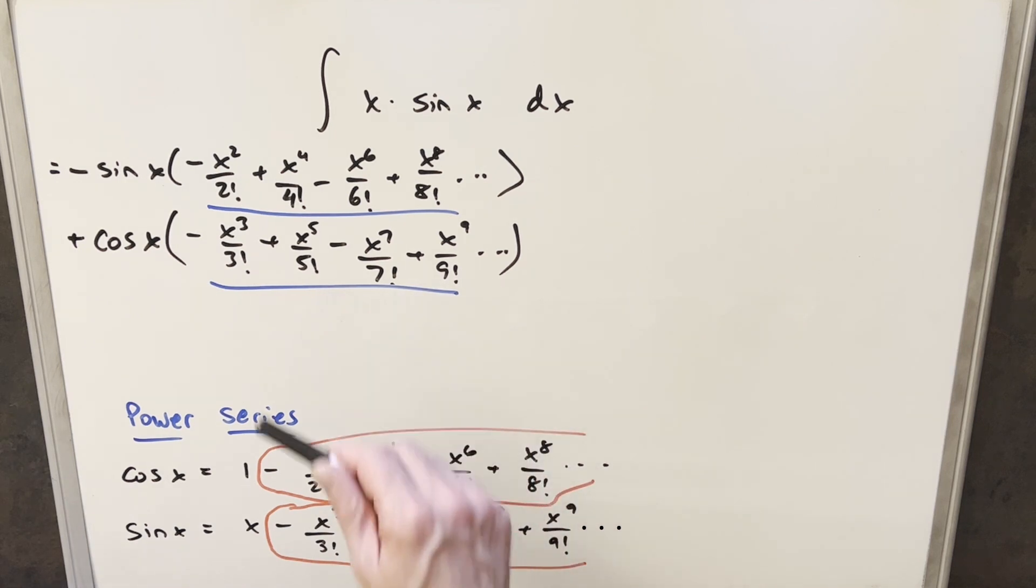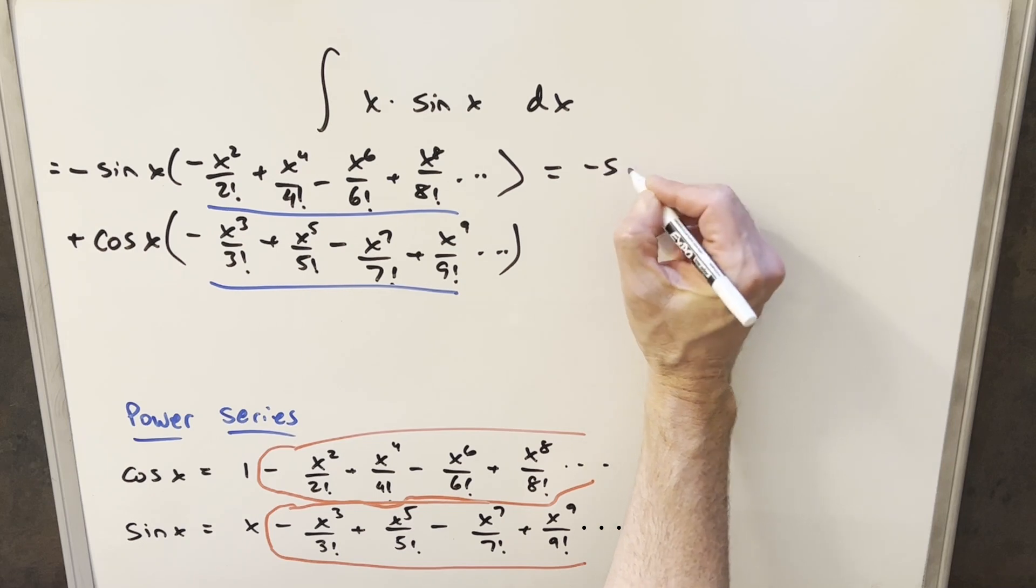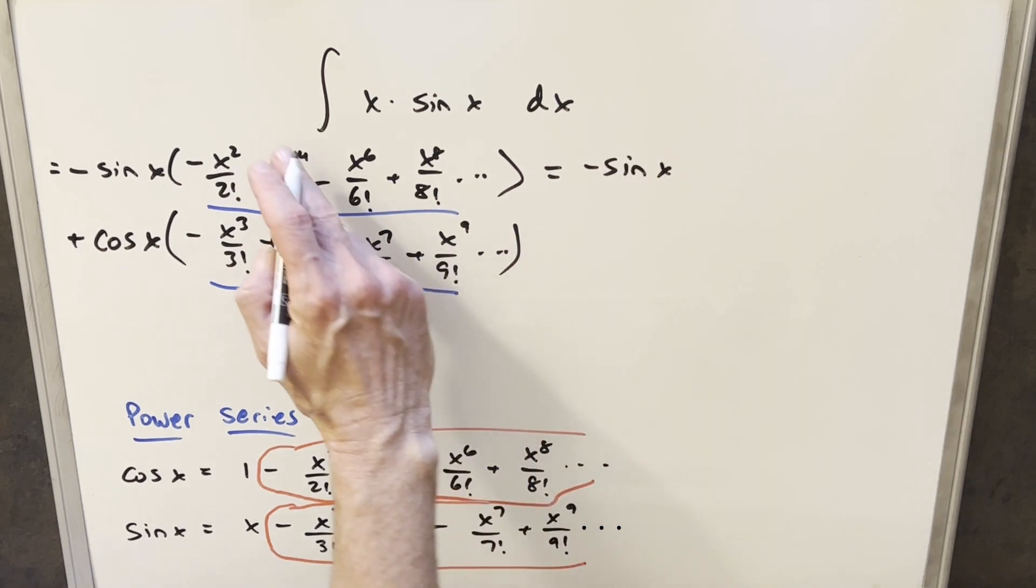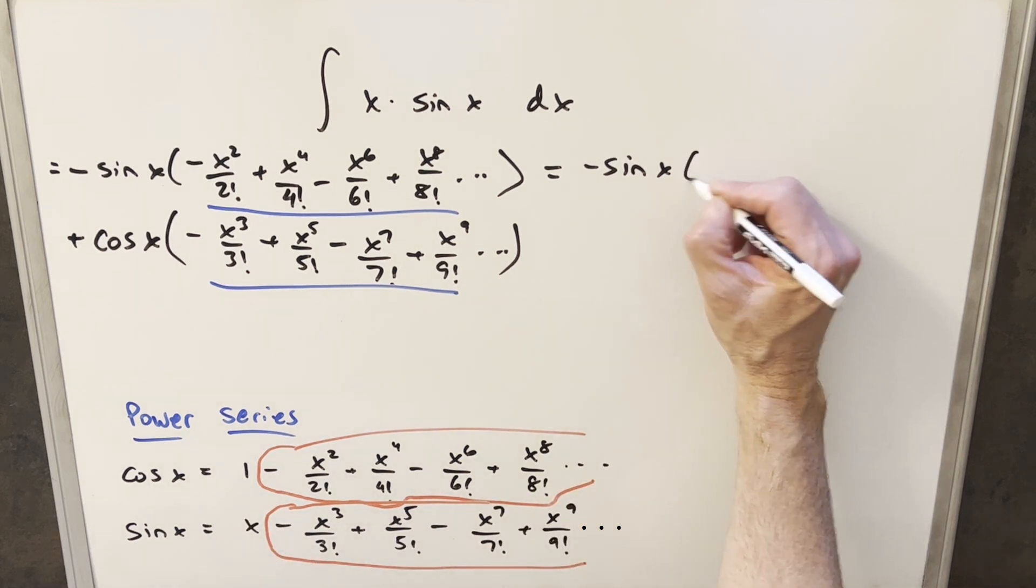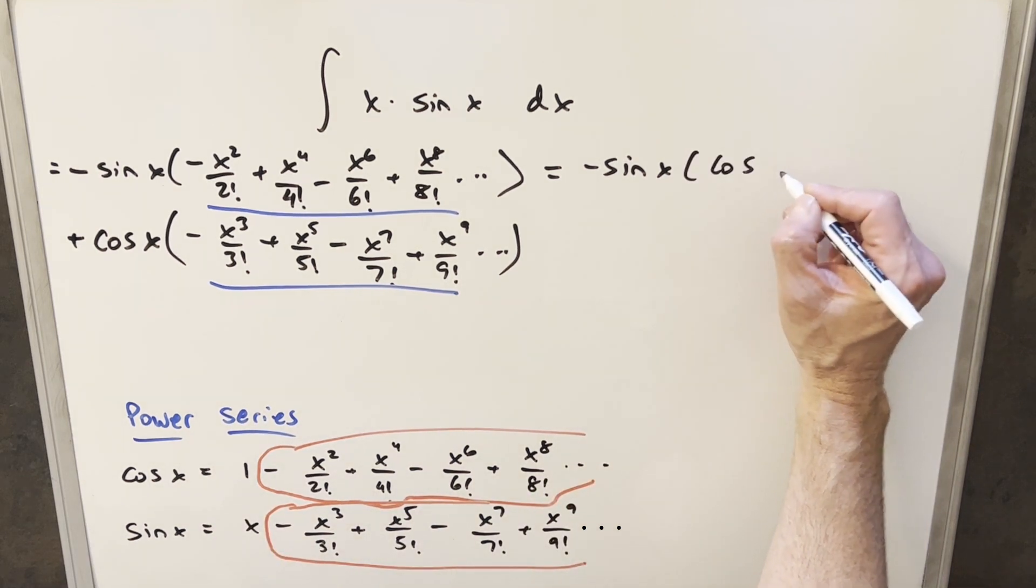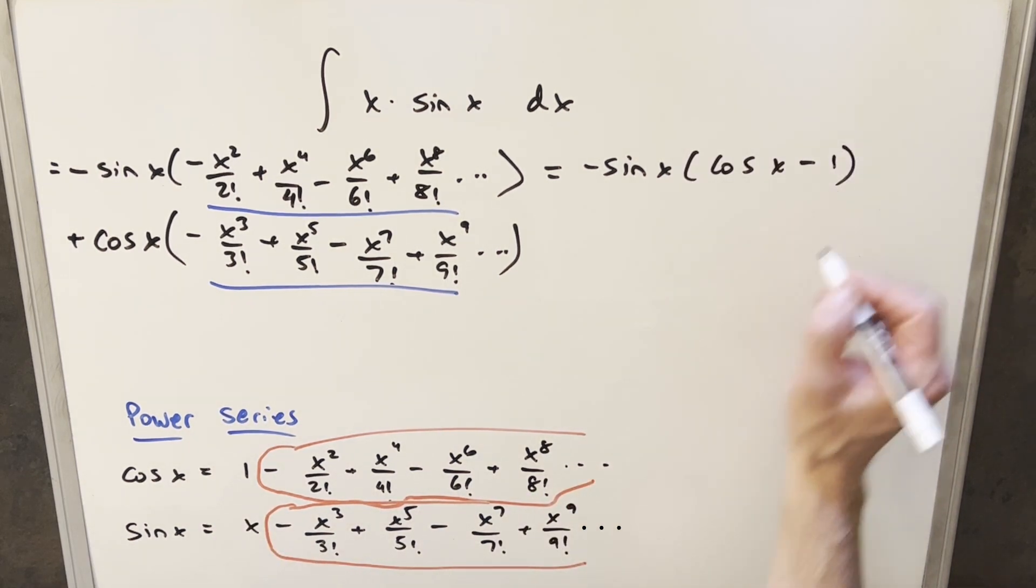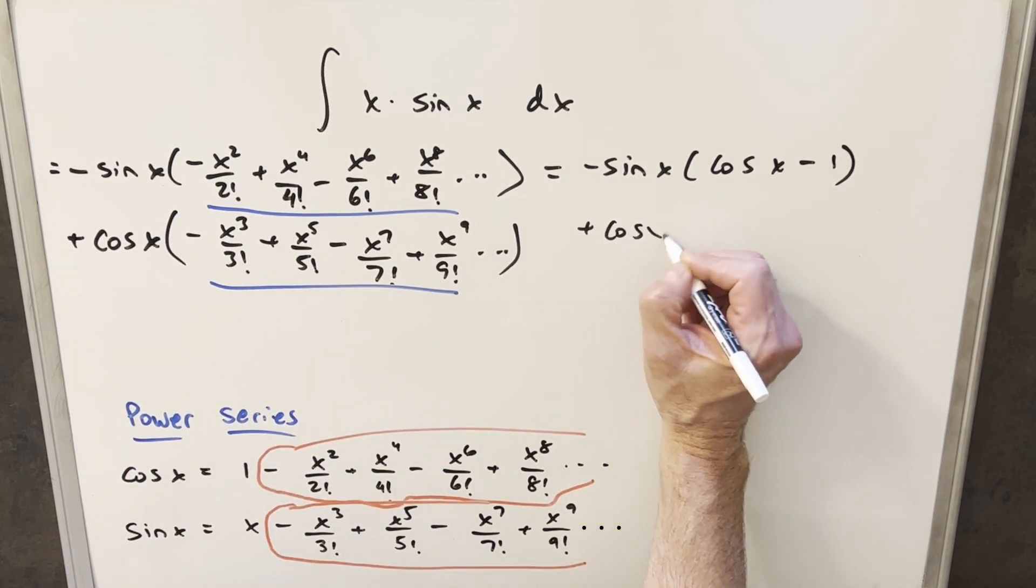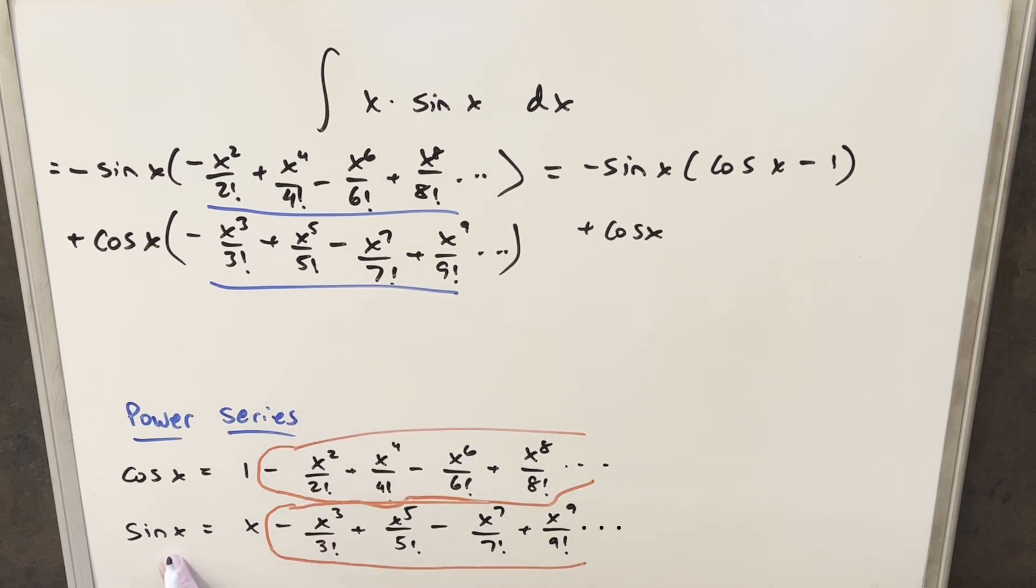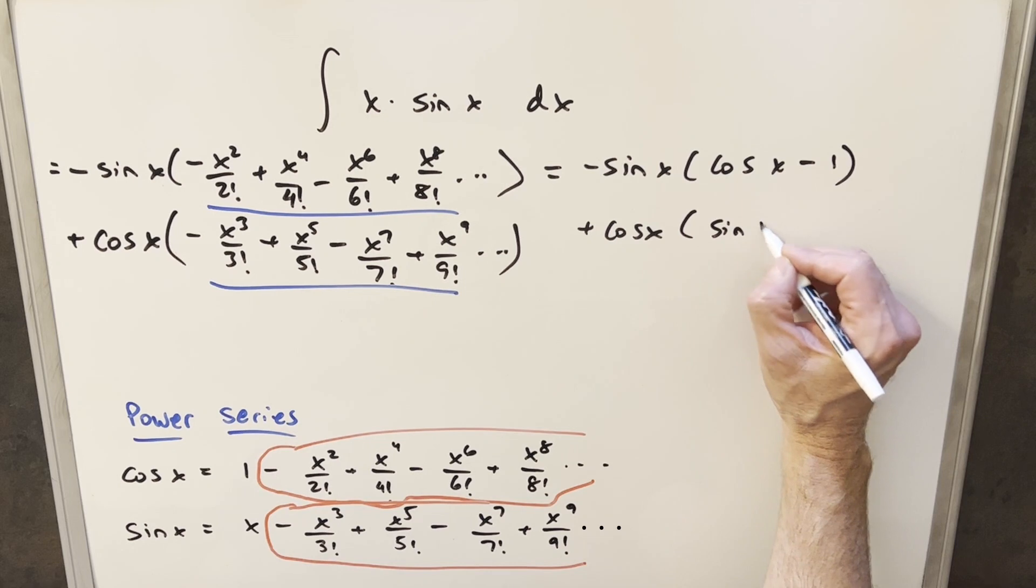I can rewrite this expression using this power series. We have our minus sine x here, but this whole thing is just going to be cosine x minus one, just subtracting off that one right there. So I can write this as cosine x minus one. Then coming down to this piece, here we have cosine x, but this piece right here is just going to be sine x minus x. So we can just write this in right here.